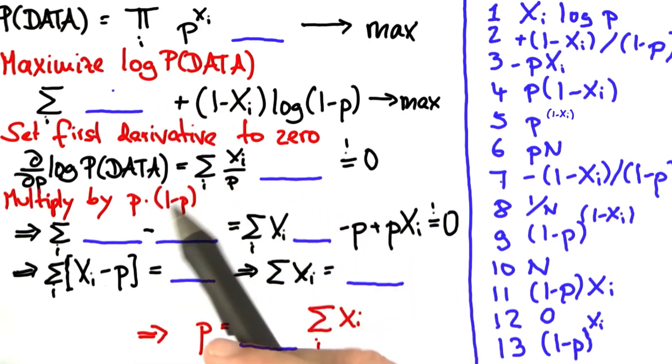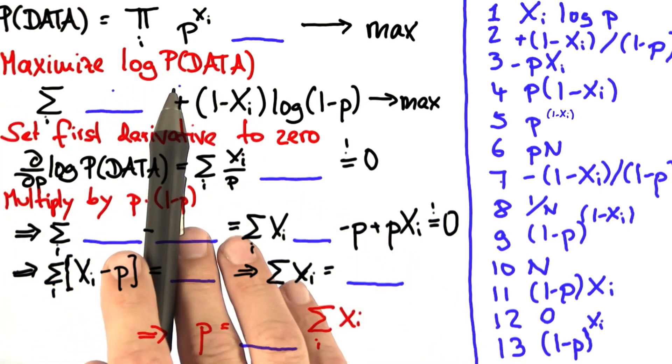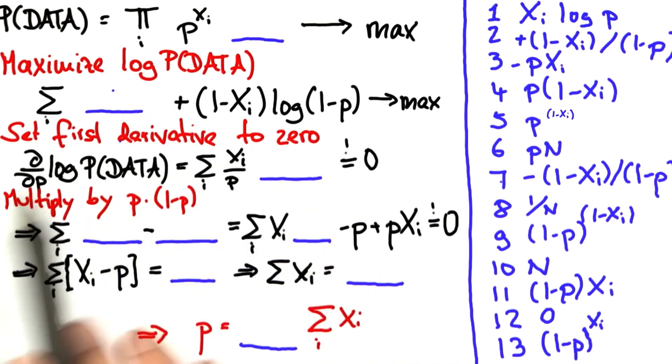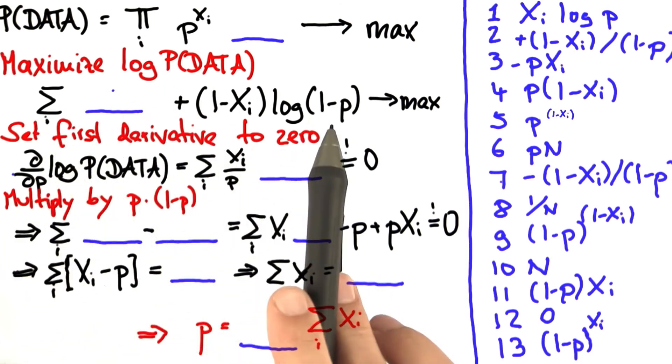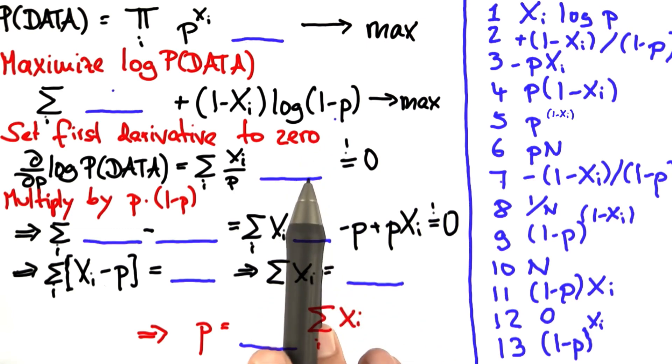The way the proof works is by first taking the logarithm of this expression over here. This ends up over here. Then we set the first derivative to 0. So you have to compute the first derivative and plug it in here. And then you have to transform it all the way until you achieve the final result. Good luck.